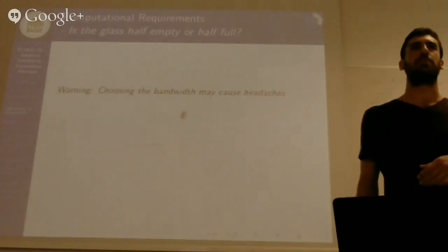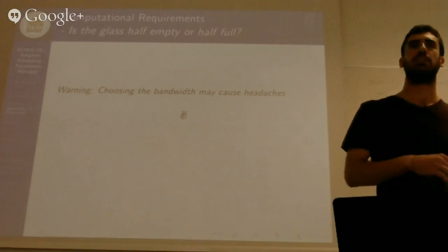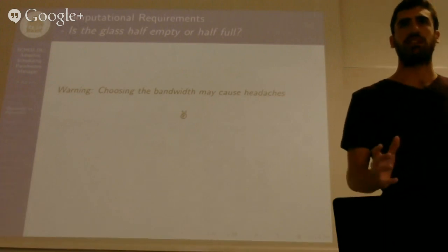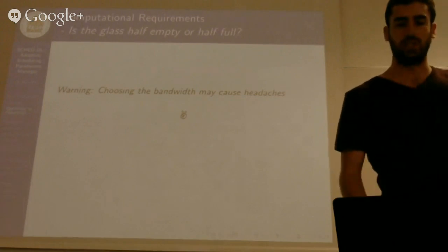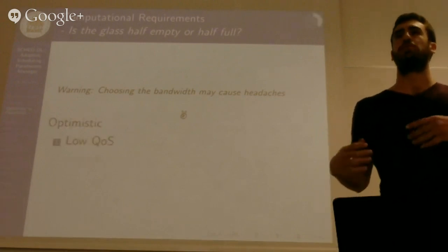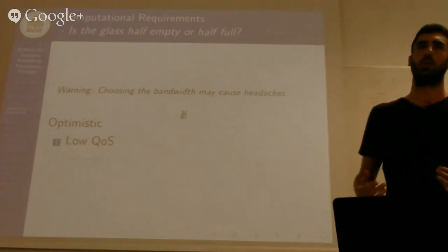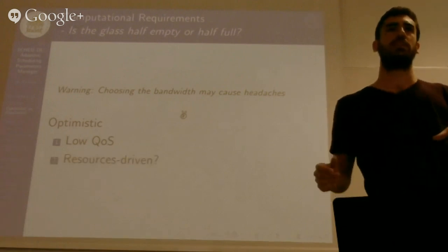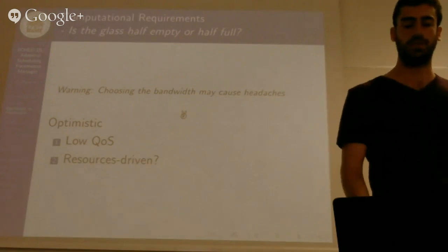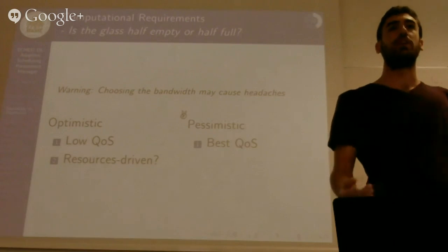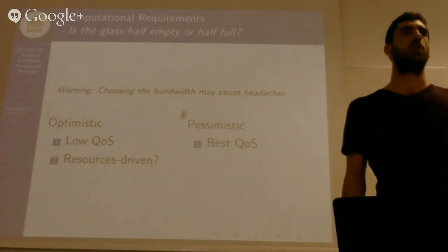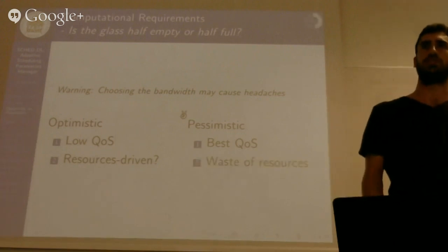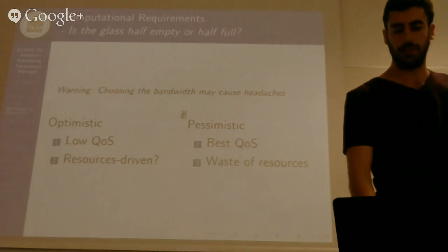So you can, for instance, use some tracing tool to detect all the paths and the possible times in a statistical way. And then adjust the bandwidth by your decision. So you can perform an optimistic decision, and then you will obtain a low quality of service. But the bandwidth decision can be resource-driven. So you can adjust the bandwidth based on how resources you have. Or you can be pessimistic. So you can, for instance, use the worst-case execution time. And you will obtain, of course, the best quality of service. But it's just a waste of resources. You are over-provisioning probably.